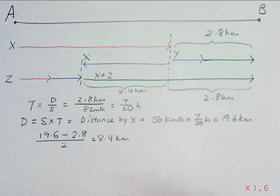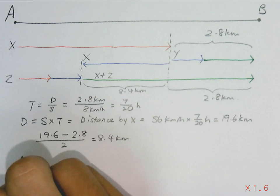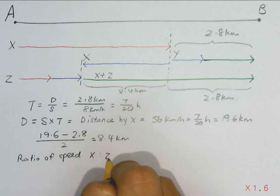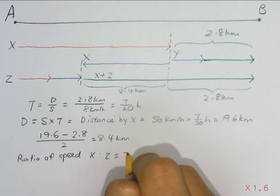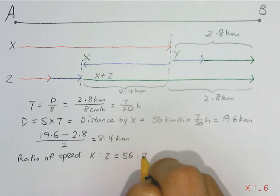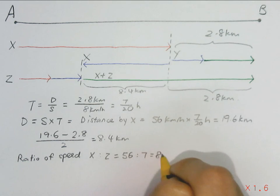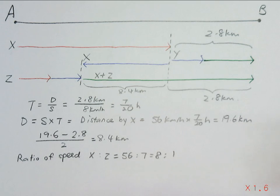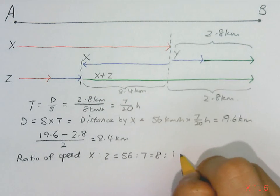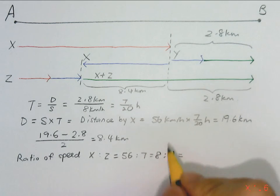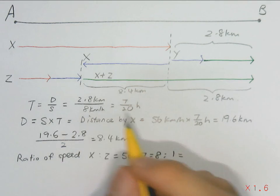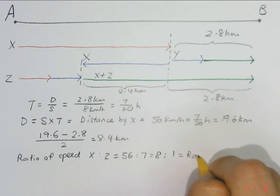Next, we also notice that the ratio of the speed of X and Z, which is 56 to 7, in simplest form would be just 8 to 1. Now this is an important clue because at the same time taken, the ratio of distance will also be 8 to 1.